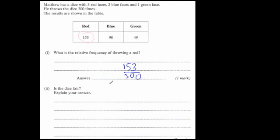So, we've got 300 as the number of trials. And if we looked at red, the probability of getting a red is equal to, well, it's three out of the six faces. So that's three sixths. Well, actually, it's a half. So the number of times you'd expect red would be a half times 300. And a half times 300 is 150. So we'd expect 150 reds, and we've got 153.